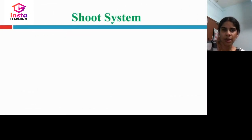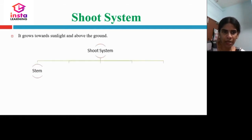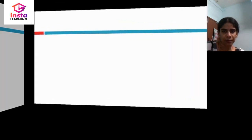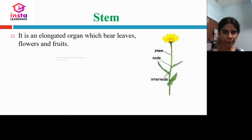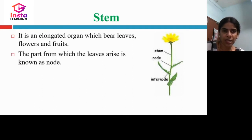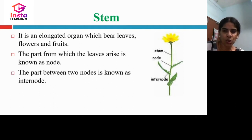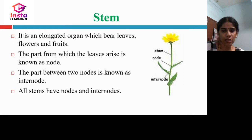Let us now learn about the shoot system. It grows towards the sunlight and is above the ground. The stem is an elongated organ which bears leaves, flowers, and fruits. The part from which the leaves arise is known as the node. The part between two nodes is known as the internode. All stems will have nodes and internodes.